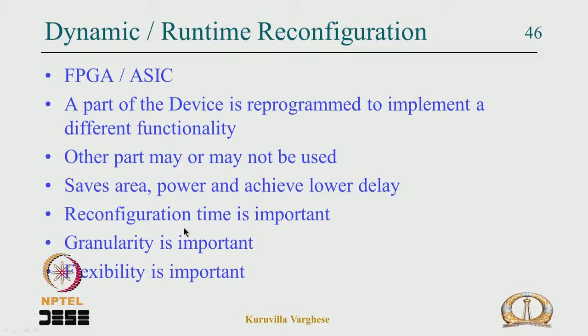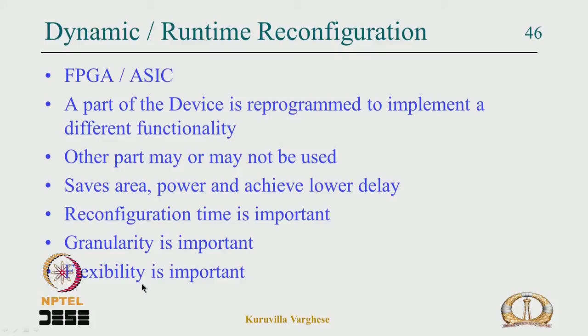The reconfiguration time is critical — if switching from Bluetooth to Wi-Fi takes 10 seconds of hardware reconfiguration it will not satisfy users. Granularity is also important: what portions of the chip can be reprogrammed, and at what size granularity. Flexibility matters too — ideally any part of the chip should be reprogrammable. These three properties — reconfiguration time, granularity, and flexibility — are key to dynamic reconfiguration.